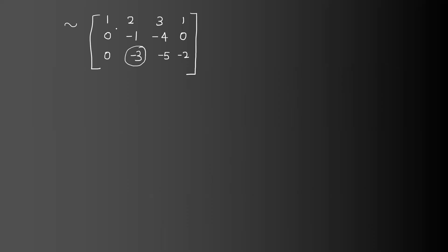So these values give us the diagonal elements. The first element is 1. The next element is minus 1, and we need to make the entry below it 0. So R3 changes by adding R3 minus 3·R2.